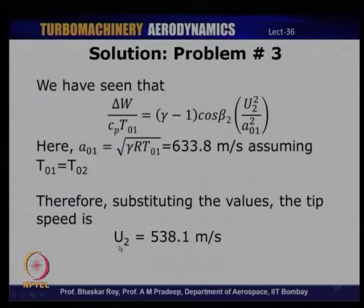An alternative approach is to calculate the blade speed first, then compute C2 from blade speed and alpha2, then obtain static temperature T2 = T02 − C2²/(2Cp), and finally Mach number = C2/√(γRT2). That completes the third problem. The fourth problem is a simple comparison — no involved calculations — to compare the performance of axial and radial turbines under given operating conditions.